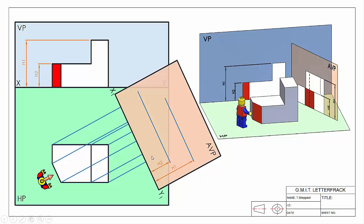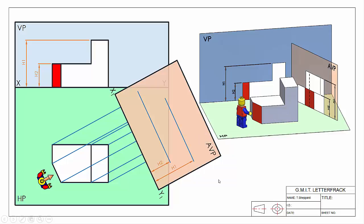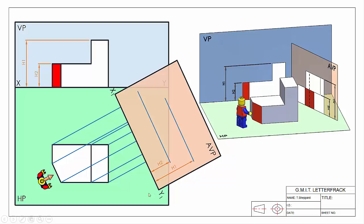Then all we need to do is continue our projection lines on for each individual surface to create our auxiliary elevation of that surface. For our L-shape — in our plan view this corner, this corner, and this corner represent the different edges on that surface. Continuing them using our height lines, we can redraw the shape of that surface. Our L-shape goes up, across, down, across, and down again — and it's exactly the same here: up, across, down, across, and down again. So despite being a little bit narrower, the overall shape of our auxiliary view doesn't change from our front elevation.